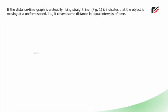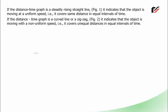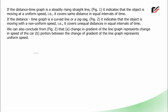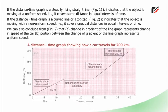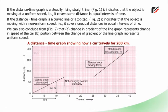If the distance-time graph is a steadily rising straight line (Figure 1), it indicates the object is moving at a uniform speed — it covers the same distance in equal intervals of time. If the graph is a curved or zig-zag line (Figure 2), it indicates non-uniform speed — unequal distances in equal time intervals. From Figure 2 we can also conclude: a) a change in the gradient of the line represents a change in speed, and b) a portion between gradient changes represents uniform speed.